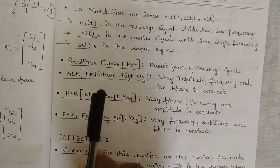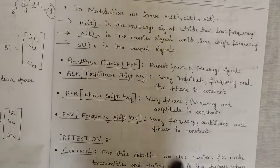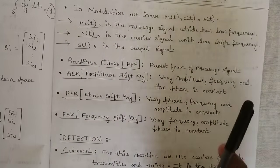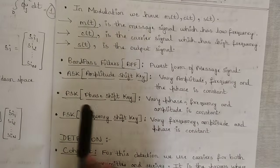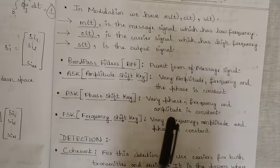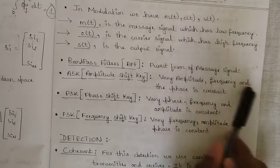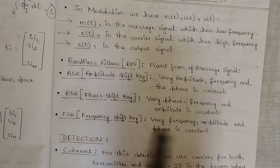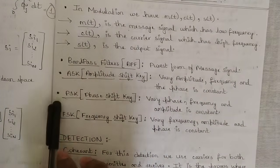ASK stands for Amplitude Shift Keying: it varies the amplitude while frequency and phase are kept constant. PSK stands for Phase Shift Keying: it varies the phase while frequency and amplitude are kept constant. In FSK, Frequency Shift Keying, the frequency is varied while amplitude and phase remain constant.